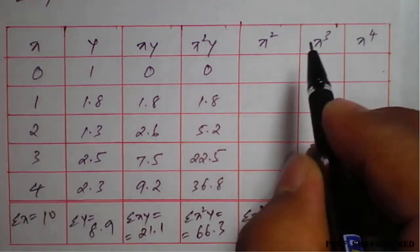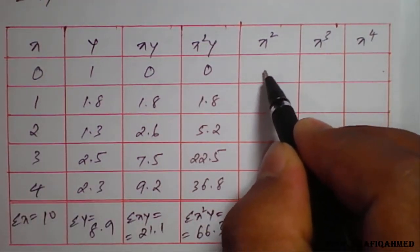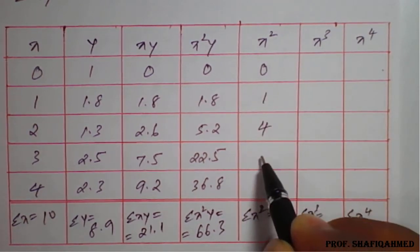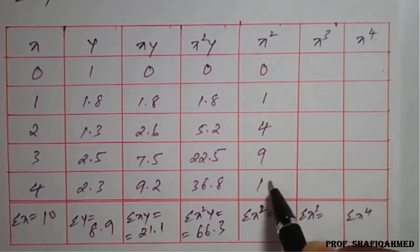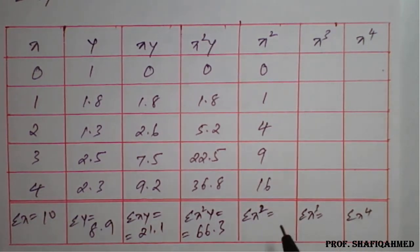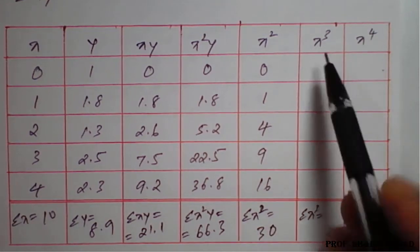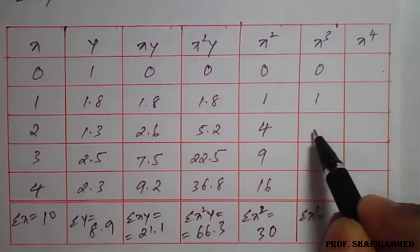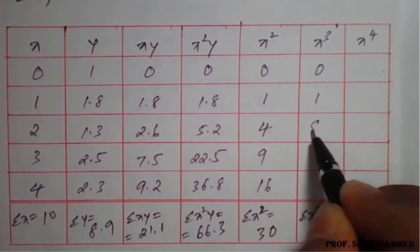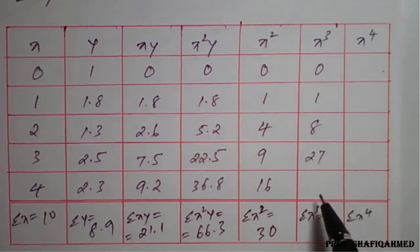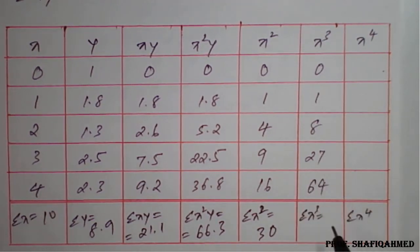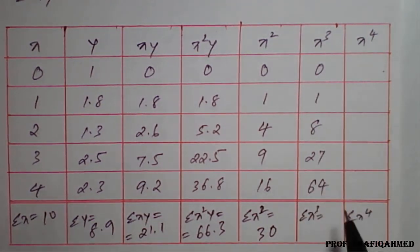For x²: 0²=0, 1²=1, 2²=4, 3²=9, 4²=16, so summation(x²) = 30. For x³: 0³=0, 1³=1, 2³=8, 3³=27, 4³=64, and summation(x³) = 100.